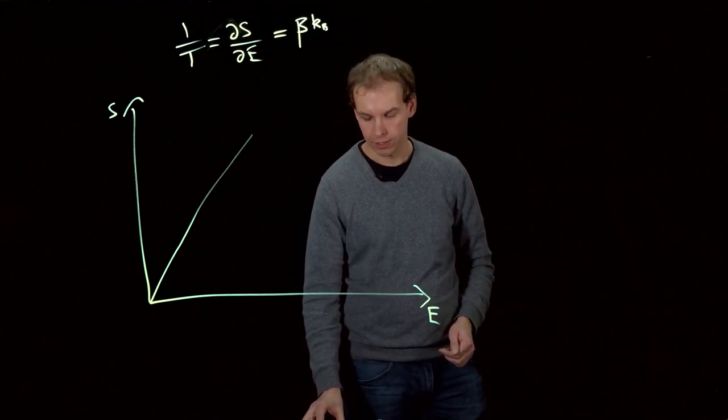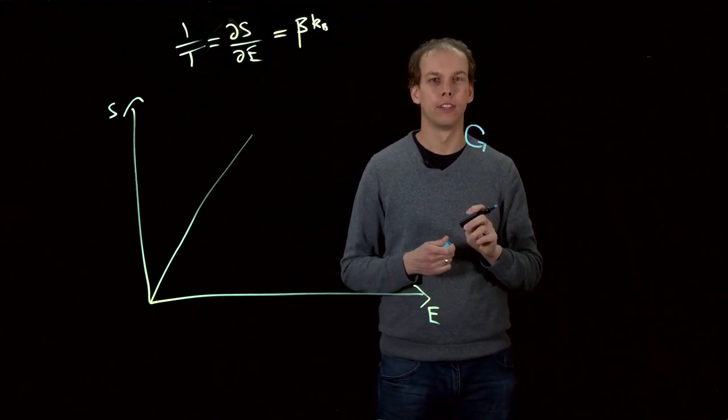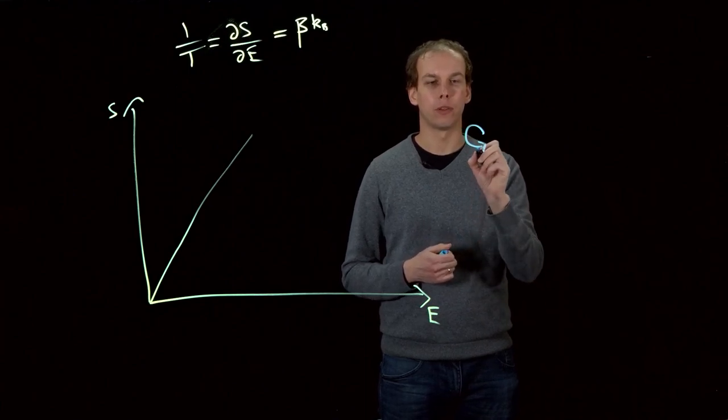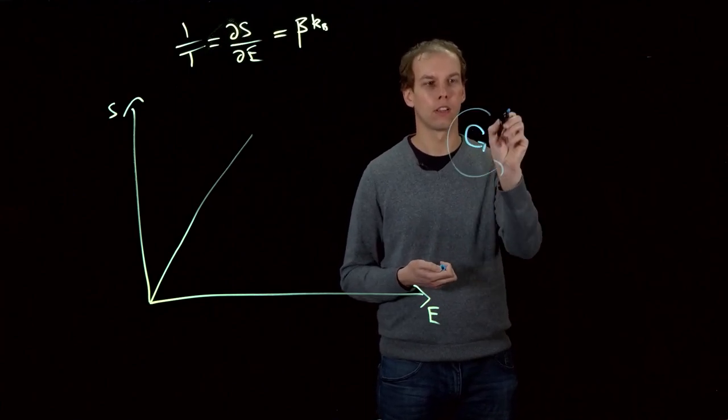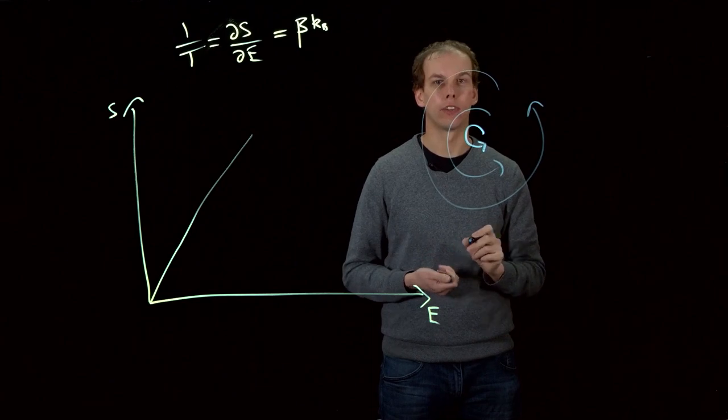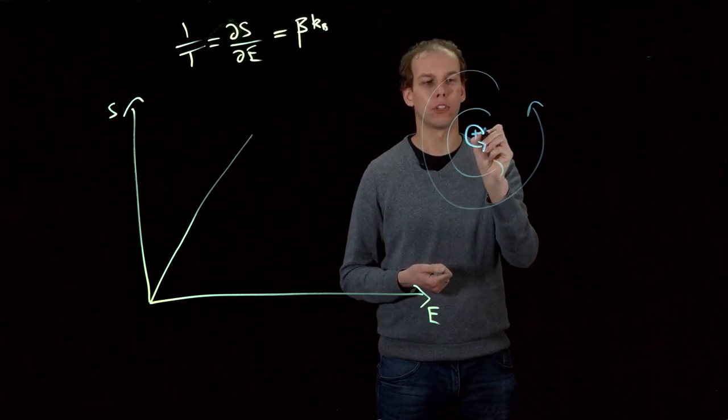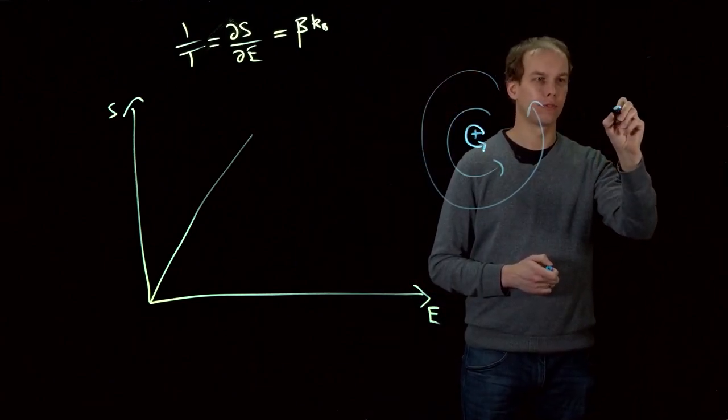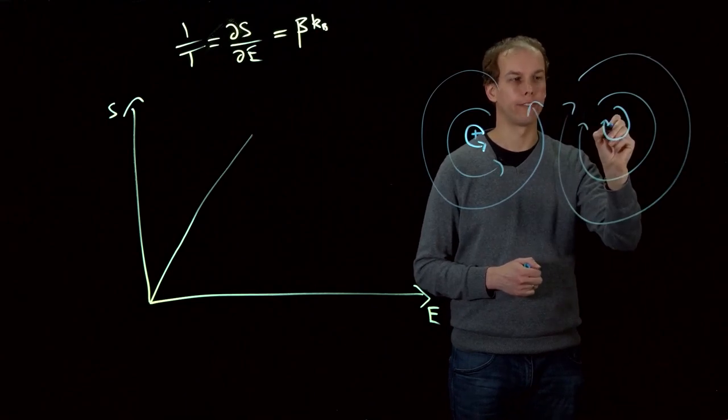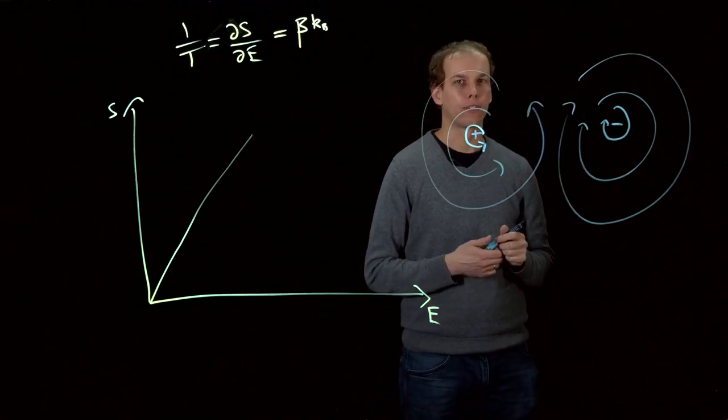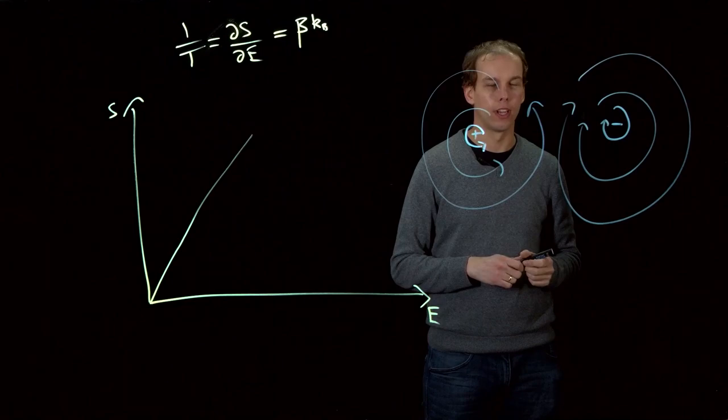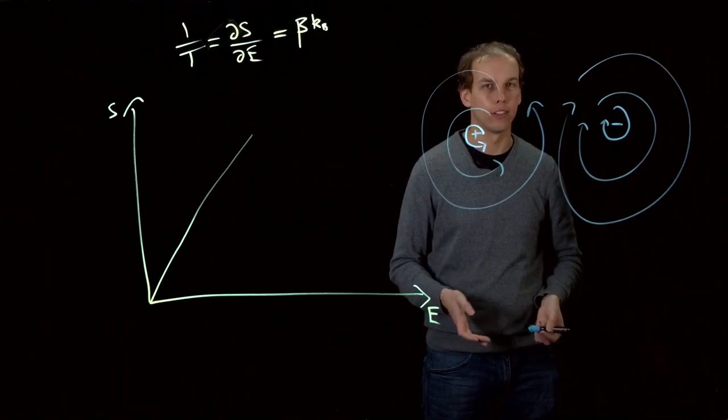The vortices in a superfluid can be thought of as points about which fluid is flowing, and can either flow in one direction, which we'll call positive, or flow in the opposite direction, which we'll call negative. These velocity fields, due to the vortices, are going to extend out throughout the fluid.